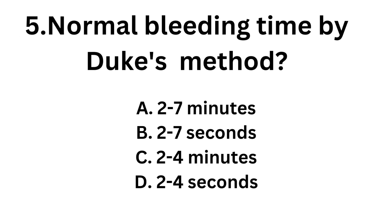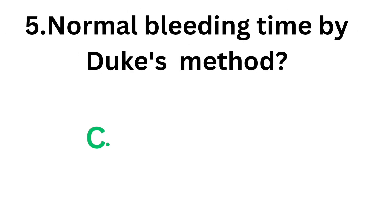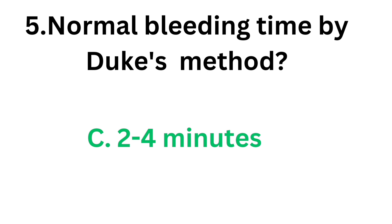Question number five: normal bleeding time by Duke's method — option A 2 to 7 minutes, option B 2 to 7 seconds, option C 2 to 4 minutes, option D 2 to 4 seconds. The correct answer is option C, 2 to 4 minutes.